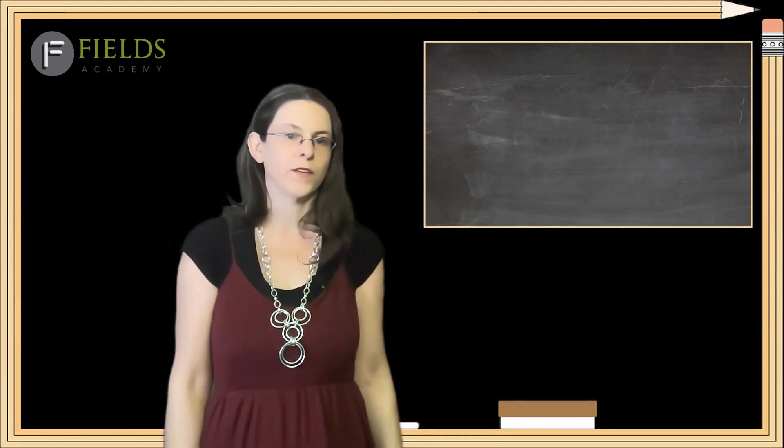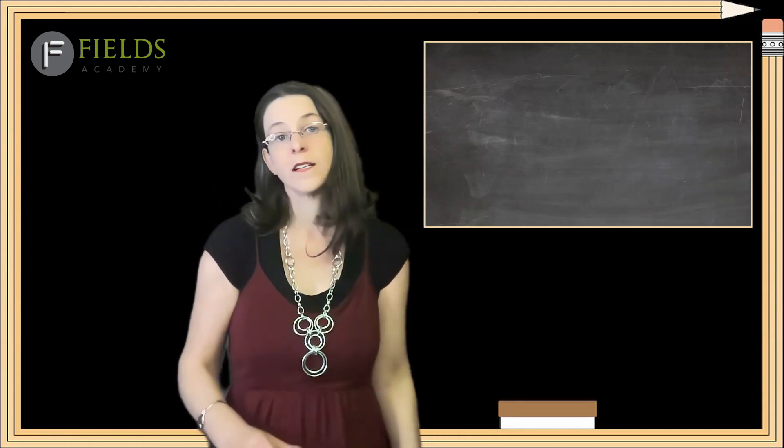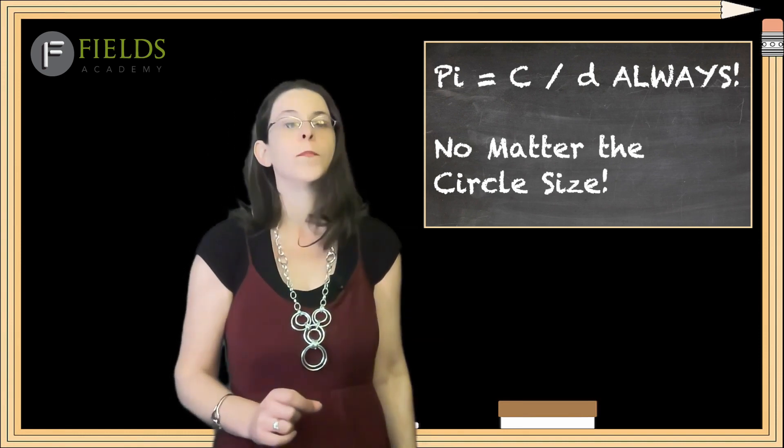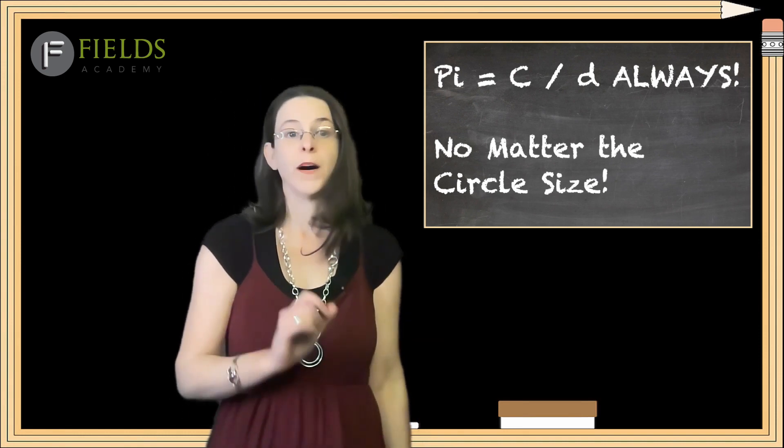Okay, so what's so special about that? Well, no matter the size of the circle, we will always get the number pi when we divide its circumference by its diameter.